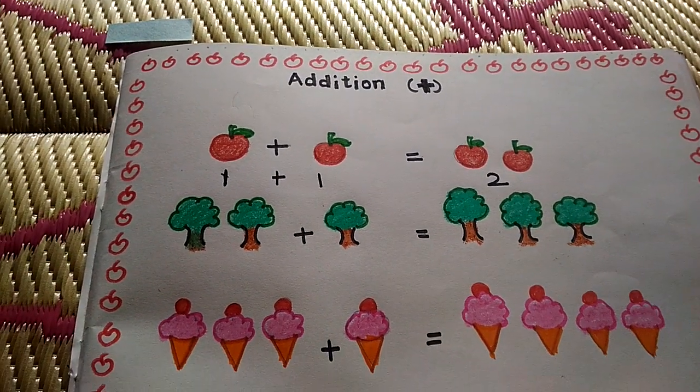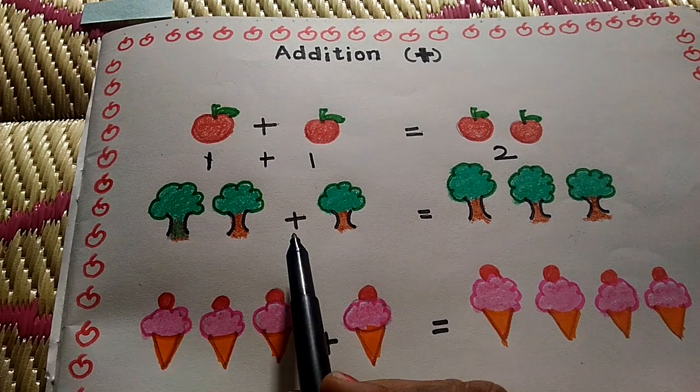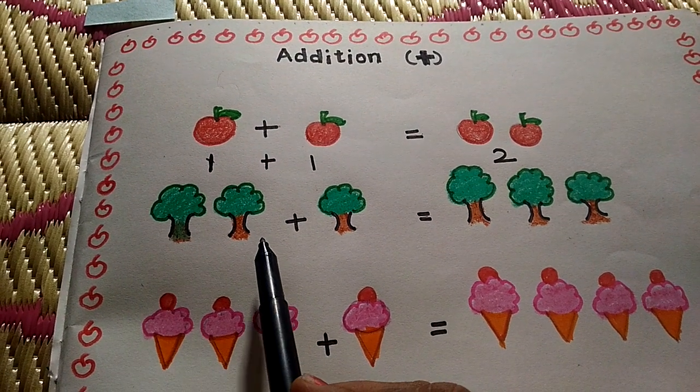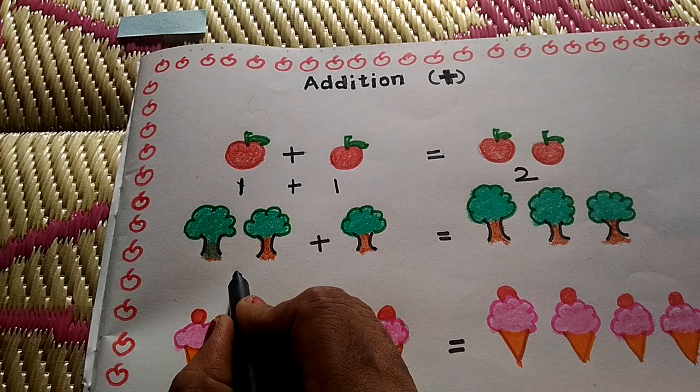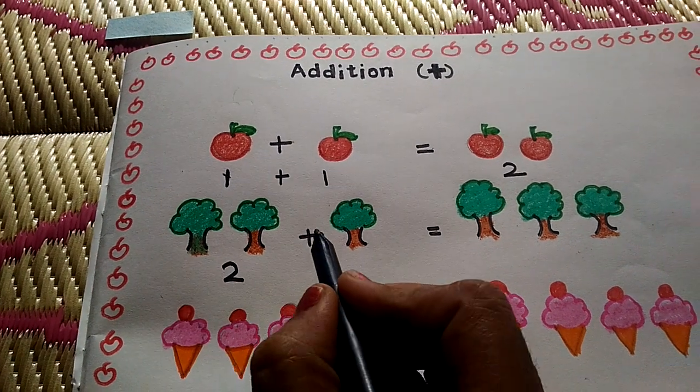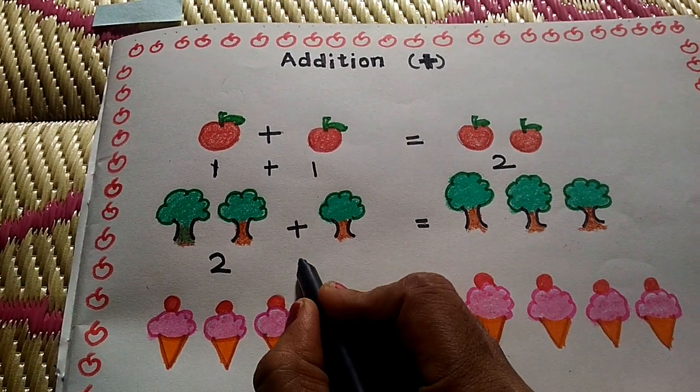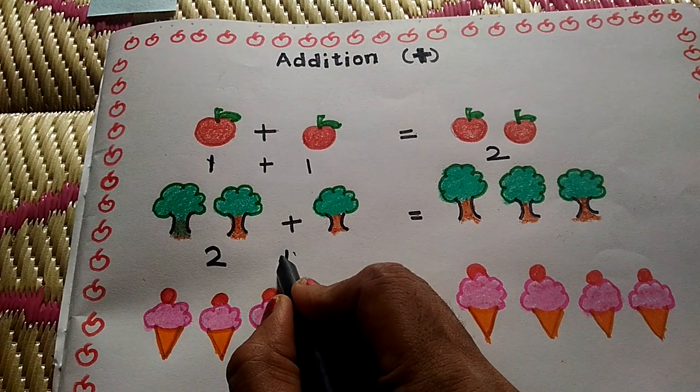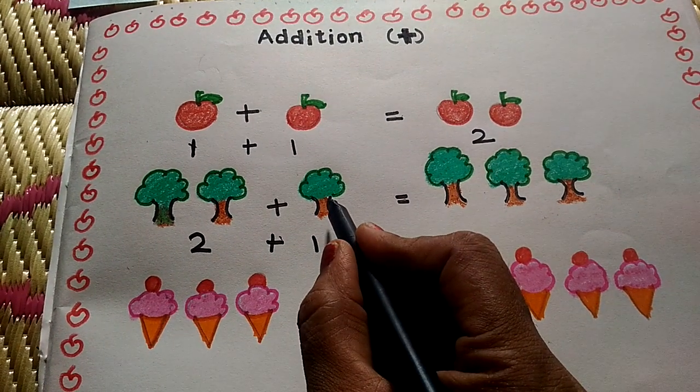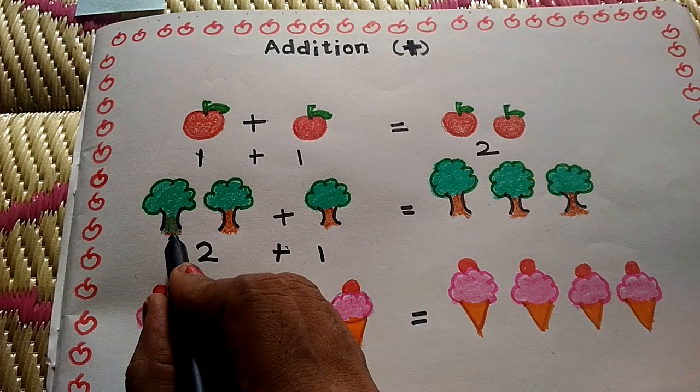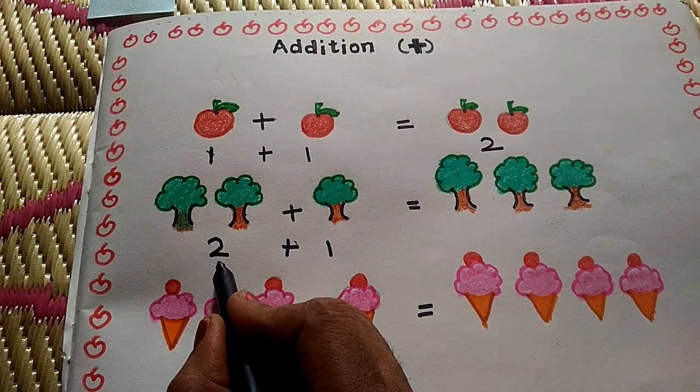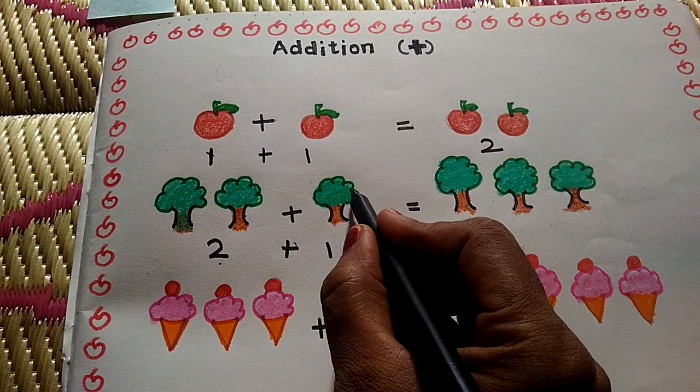Next, one more example here. How many trees here? One, two. Two trees. Two plus one. How many trees here? One tree. One, two. Two trees. Two. Two plus one, one.